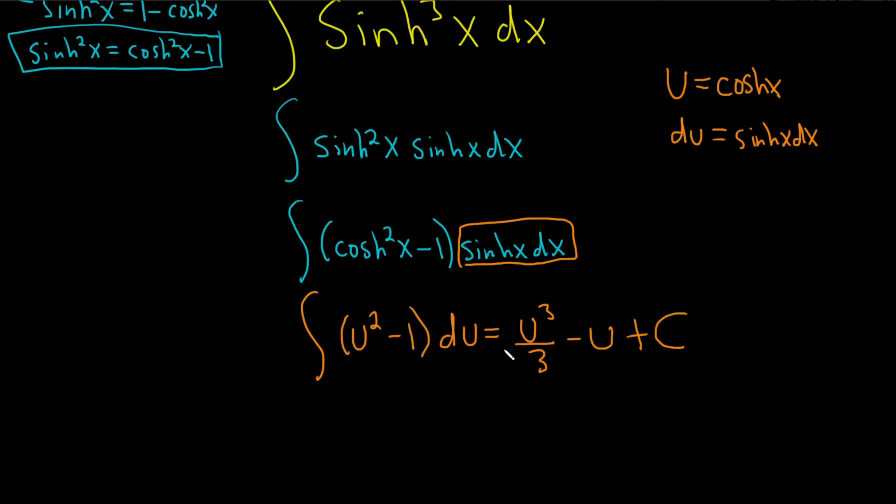And now we just plug in cosh. So this will be 1 third cosh cubed of x minus cosh of x plus our constant of integration, capital C. I hope this video has been helpful to someone in the world. Good luck.